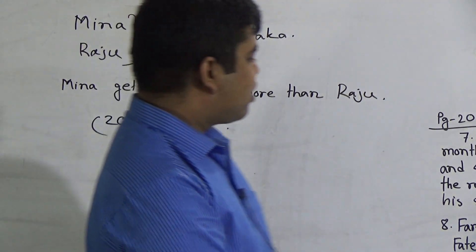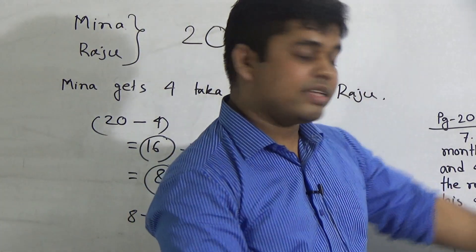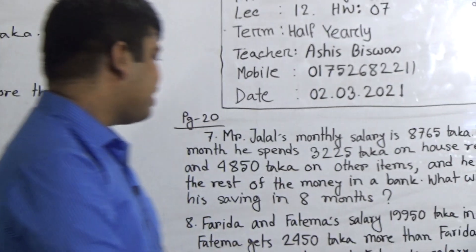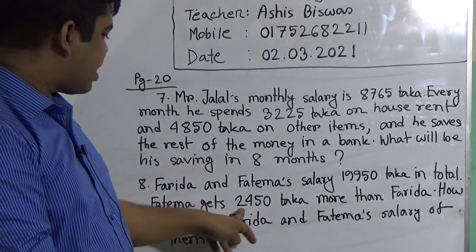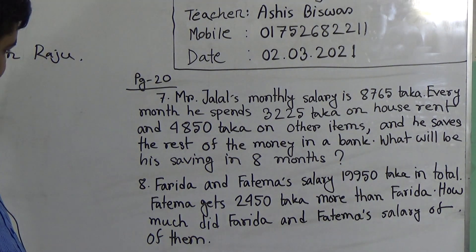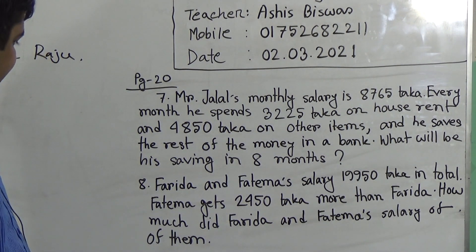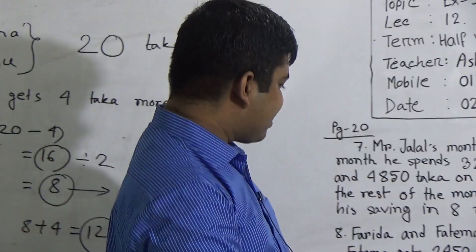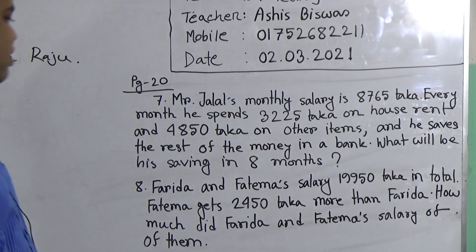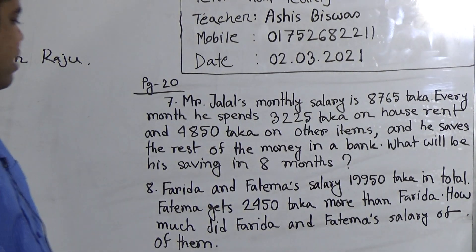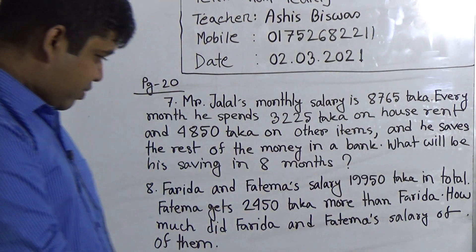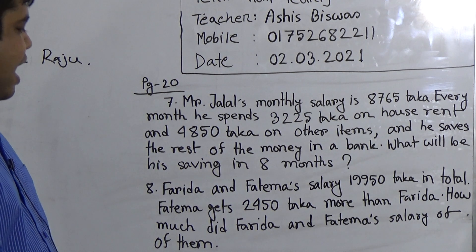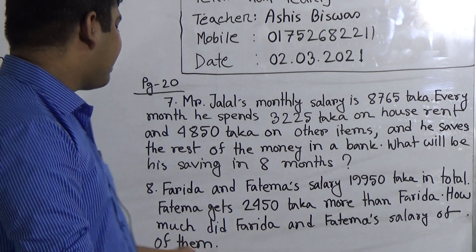Here, suppose Forida is like Raju and Fatima is like Meena. Their total salary is 19,950 Taka, and Fatima gets 2,450 Taka more than Forida. So first we subtract 2,450 from 19,950, then divide the result by 2 to get Forida's amount. After that, we add Forida's amount with 2,450 to get Fatima's amount. Forida gets: (19,950 minus 2,450) divided by 2 Taka.